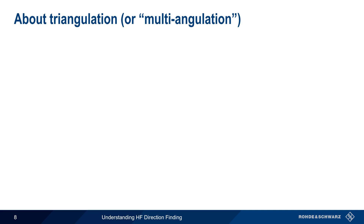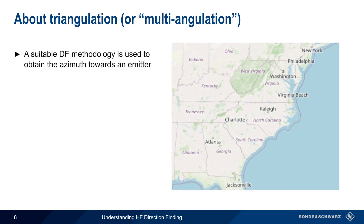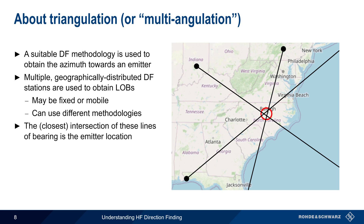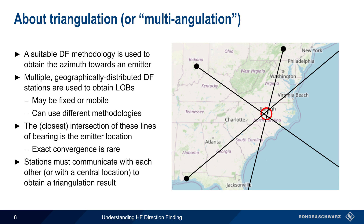Triangulation, sometimes also called multi-angulation, uses azimuth information obtained from any of the DF methodologies we just discussed. Multiple geographically distributed DF stations each obtain lines of bearing on the signal of interest. These stations may be either fixed or mobile, and they can use any appropriate methodology for obtaining these bearings. The closest intersection of these lines of bearing is the estimated emitter location. Note that bearing lines rarely converge on a single point, so the emitter location is often given as a circle or region where the lines come closest to each other. Stations must also communicate with each other or with a central location to obtain a triangulation result, either manually by plotting on a map or via an automated system.